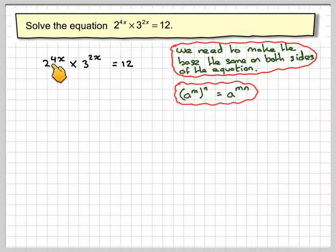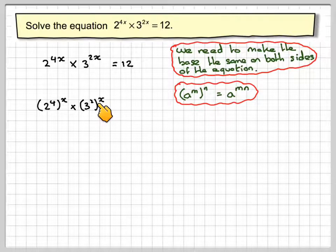So applying that here, we've got 2 to the 4. So we're going to put 2 to the 4 in brackets to the power of x times 3 squared to the power of x is equal to 12.